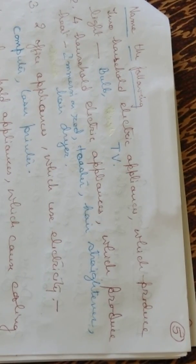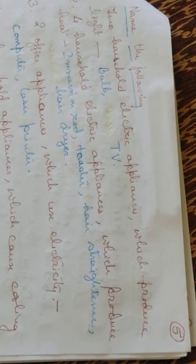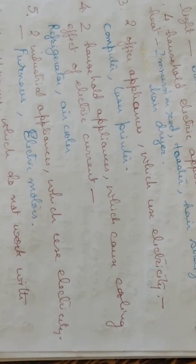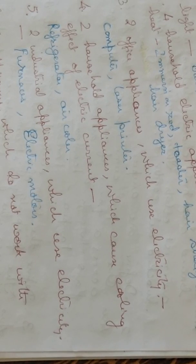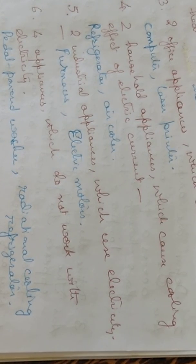First one is two household electric appliances which produce light: bulb or TV. Four household appliances which produce heat: immersion rod, toaster, hair straightener, hair dryer. Two office appliances which use electricity like computer, laser printer. Two household appliances which cause cooling effect of electric current: air cooler, refrigerator, AC also. Two industrial appliances which use electricity: furnaces, electric motors.